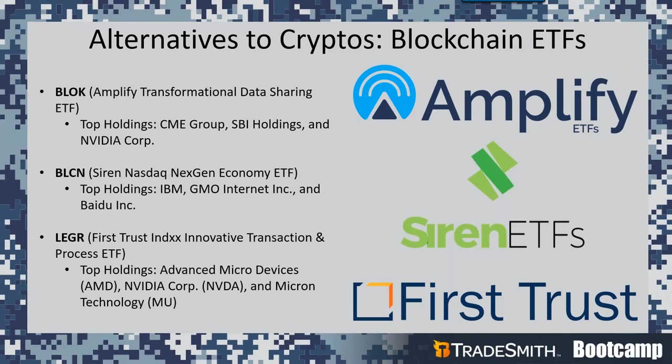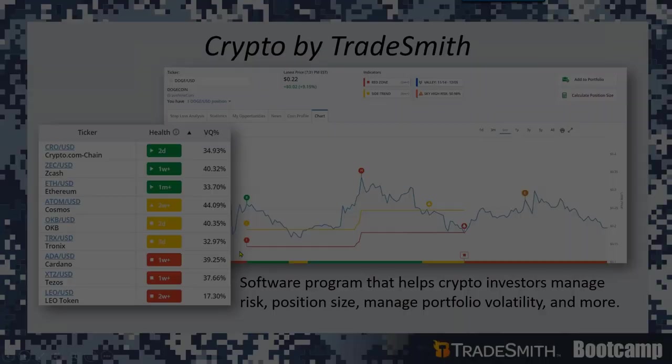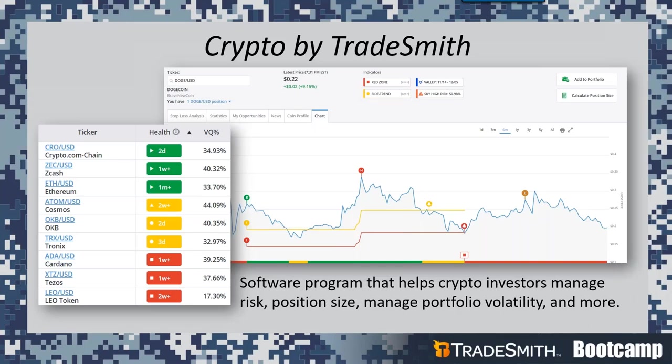Now that you have a basic understanding of what a cryptocurrency is and how it works, let's briefly review the Tradesmith products that can help cryptocurrency investors track and manage their investments. Let's start with Crypto by Tradesmith — our cryptocurrency tracking and alerting software program. It provides investors with portfolio management, risk management, and research tools. With Crypto by Tradesmith, you can create your cryptocurrency portfolios and track your cryptos with our proprietary risk and health indicators. The volatility quotient or VQ can help crypto investors determine the normal risk of each cryptocurrency, helping you with a more customized exit strategy. We also have our health indicator — our green, yellow, red light system — so you can see if a cryptocurrency is in a healthy, neutral, or unhealthy state.